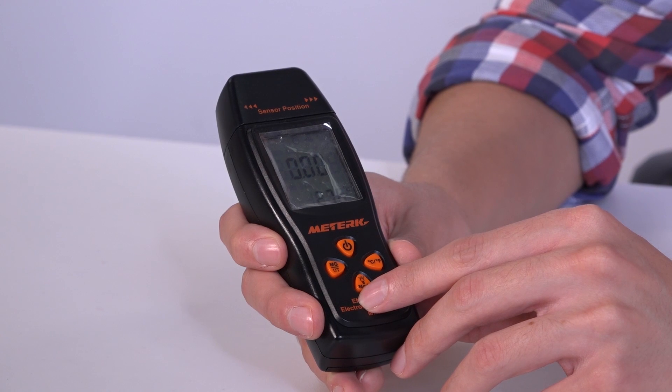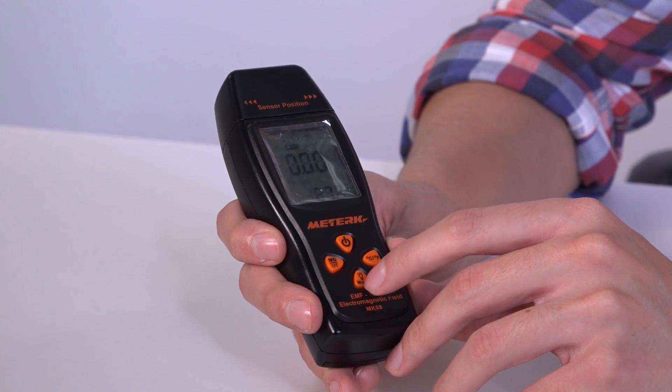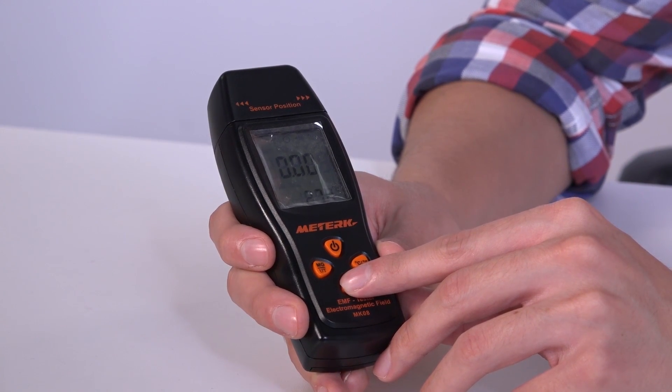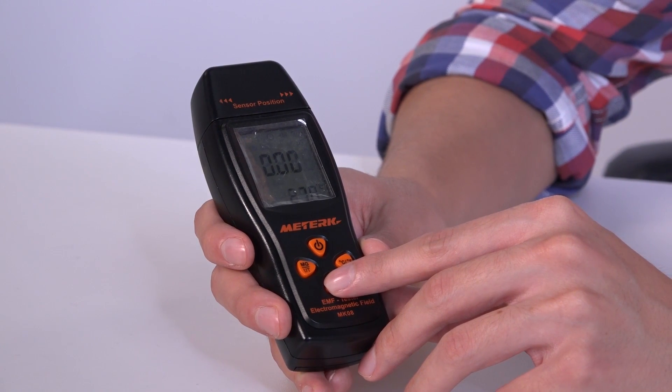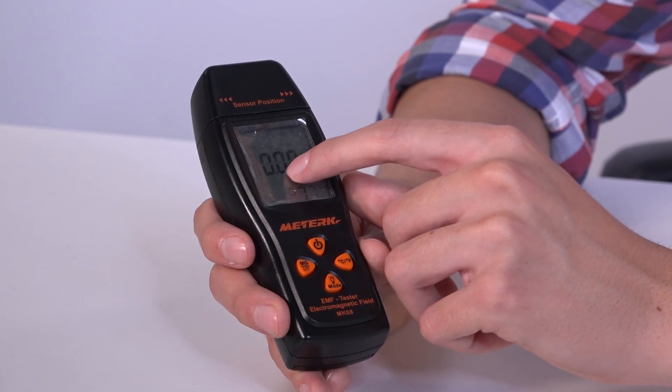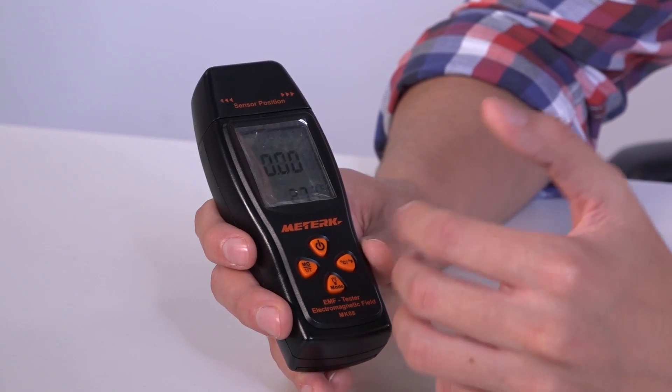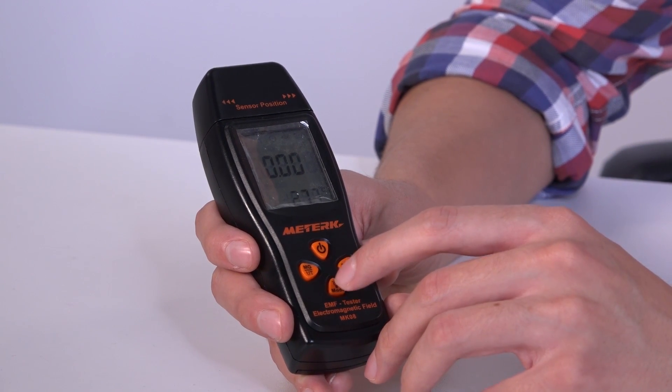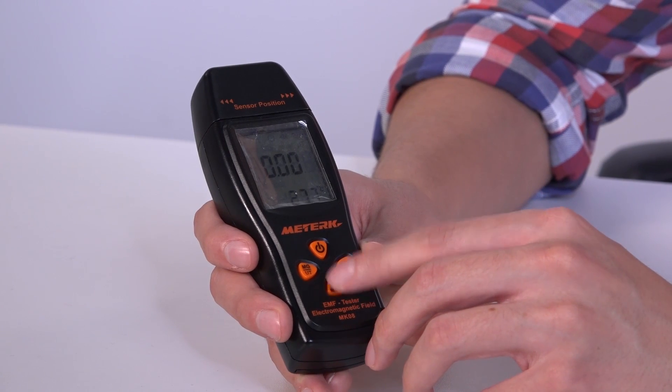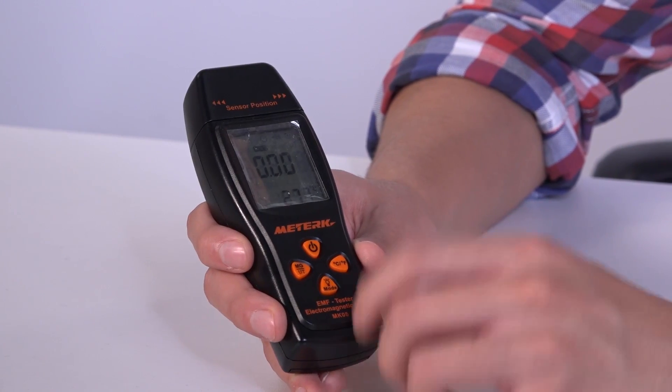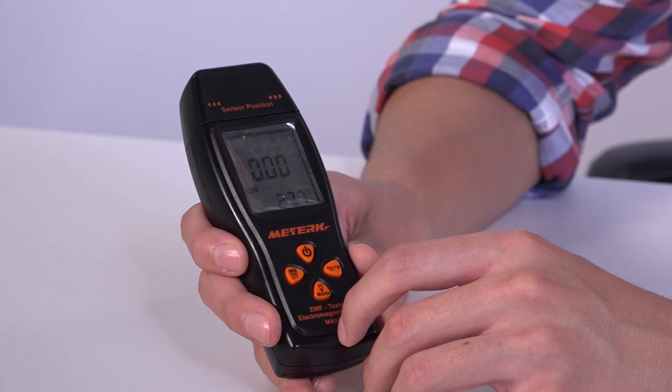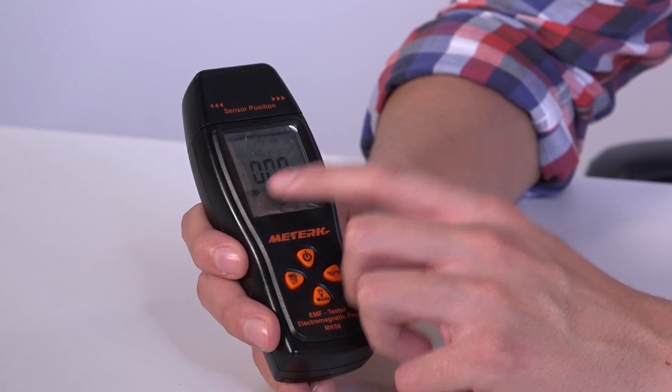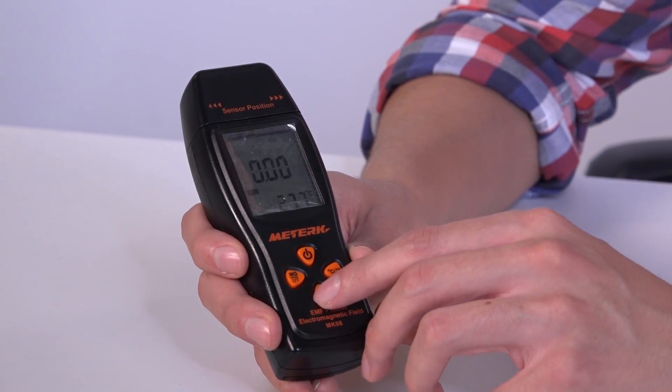And the short function of this will be having three functions here. The first is that whenever we are measuring something, the numbers are going to start changing and measuring. If we want to freeze this reading, we just press this button once and it will be hold. And if we press it for the second time, it will just register the max we've got, the max measurement we've got.